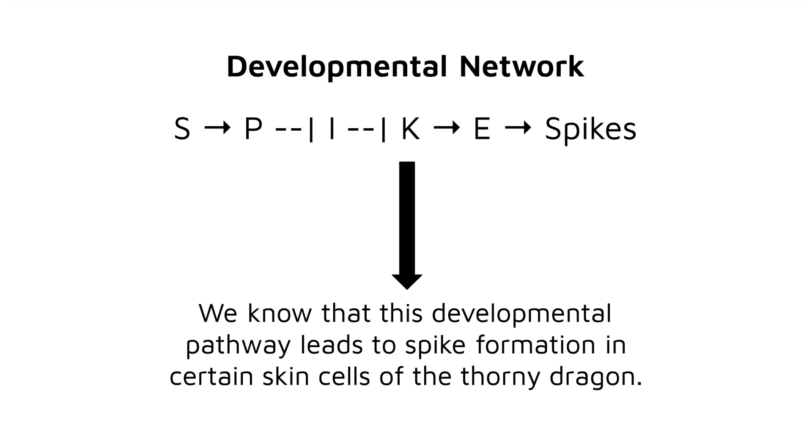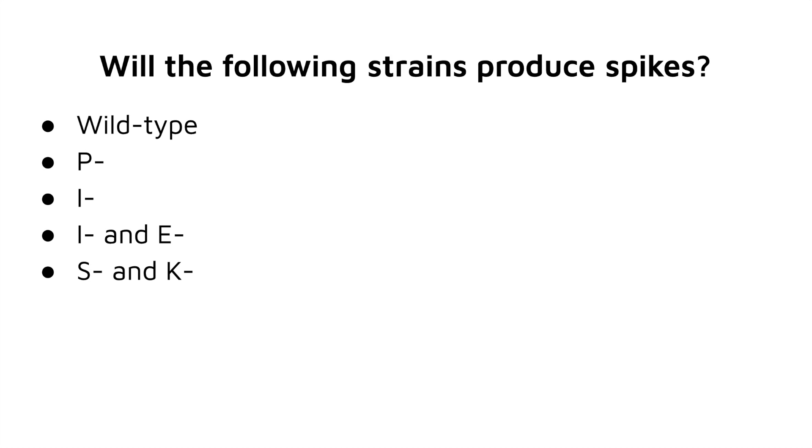Now we will look at the following strains and see if they produce spikes in our thorny dragon. Here are the ones we will be looking at in the next few slides: wild-type, P-, I-, I- and E-, and S- and K- strains.